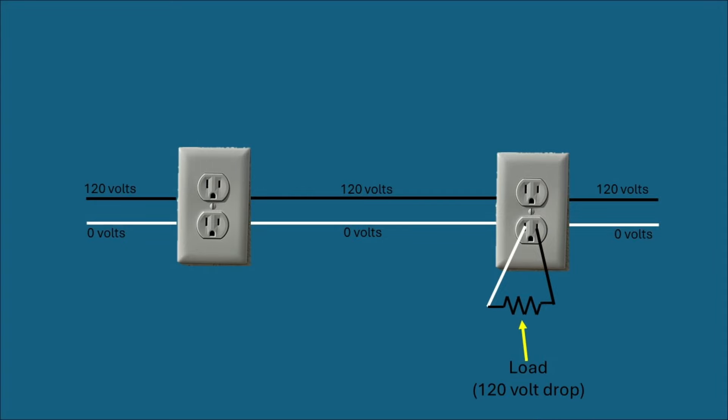Before I show you on my test board, let me show you using a diagram what happens when we have an open neutral and a bootleg ground. So here's a just a typical circuit. We've got two receptacles and we've got a load plugged in. So you've got 120 volts on all those black hot wires and you've got zero volts on the neutral wires. You can see the load plugged in and across the load you have a 120 volt drop. So that's why on the neutral side even with the load you've got zero volts.